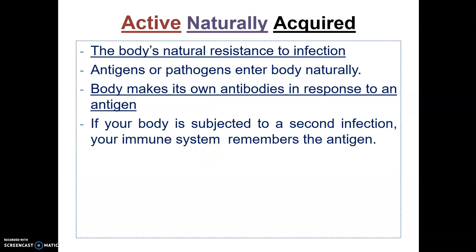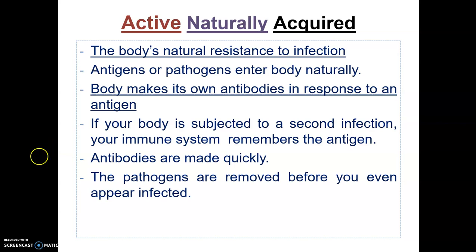On first infection, the body will respond by producing antibodies. On second infection, your immune system or lymphocytes can more easily recognize and remember the antigen, and therefore it can produce antibodies more quickly.